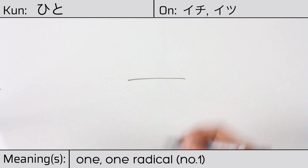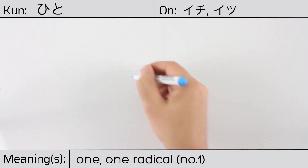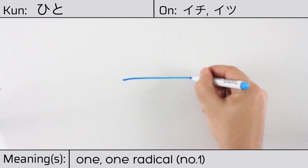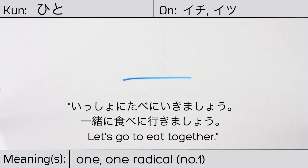This character is made up of just one horizontal stroke. You can remember this kanji by the fact that it is just one line. Our example sentence is: 一緒に食べに行きましょう — Let's go eat together.